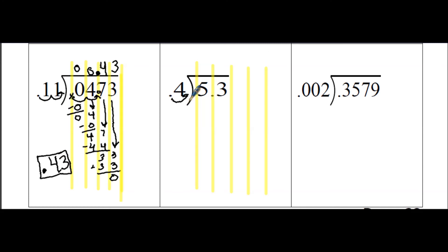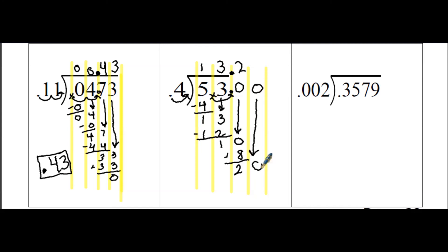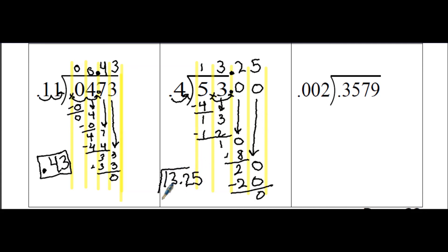We have 0.4, so we need to jump that decimal one place, and do the same thing to the decimal underneath the long division sign, then bring it up in our answer. 4 goes into 5 one time with 1 left over. Combining with the next column by bringing down the 3: 4 goes into 13 three times, 3 times 4 is 12 with 1 left over. We add a place holder 0 and bring it down — 4 goes into 10 two times, 2 times 4 is 8 with 2 left over. Another place holder 0: 4 goes into 20 five times, 5 times 4 is 20 with 0 left over. Our answer is 13.25, or 13 and 25 hundredths.